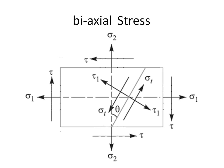When a component is subjected to more than one stress acting on mutually perpendicular axes, the component is said to be in a biaxial stress system. In the given figure, the rectangular plate is subjected to two tensile stresses acting on mutually perpendicular axes — one tensile stress on the longitudinal axis and another on the transverse axis of the rectangular plate.